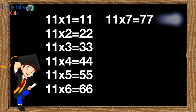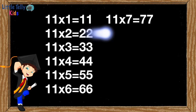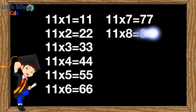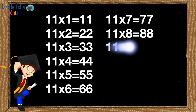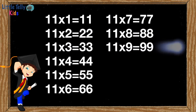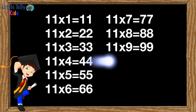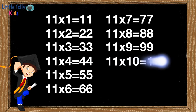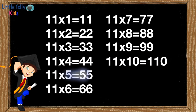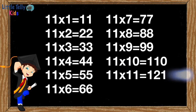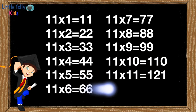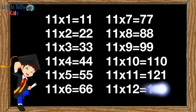Eleven sevens are seventy-seven. Eleven eights are eighty-eight. Eleven nines are ninety-nine. Eleven tens are one hundred and ten. Eleven elevens are one hundred and twenty-one. Eleven twelves are one hundred and thirty-two.